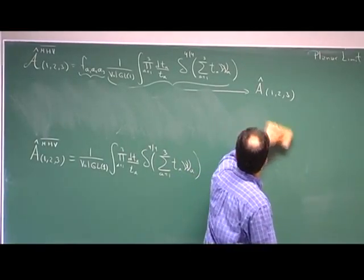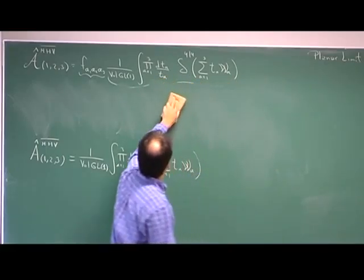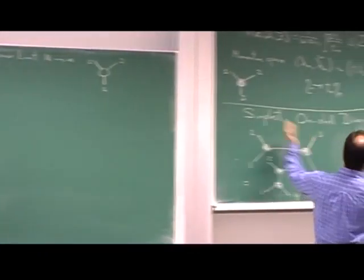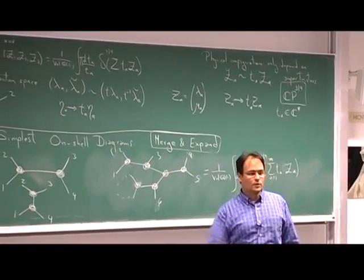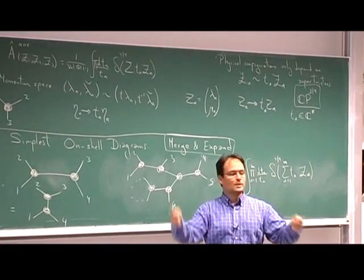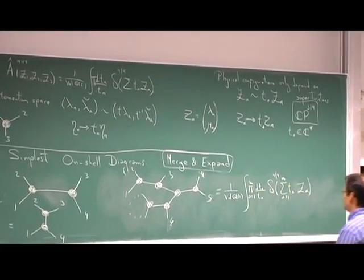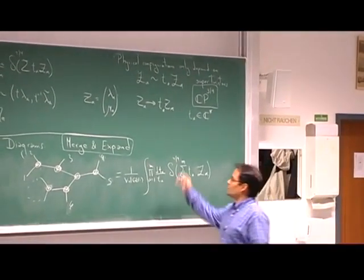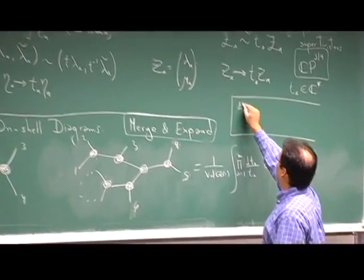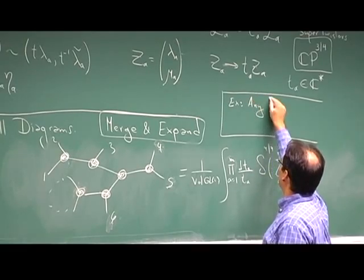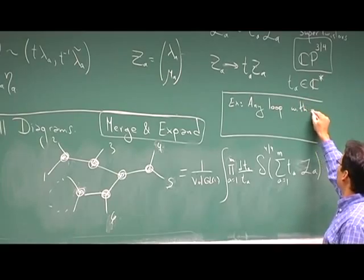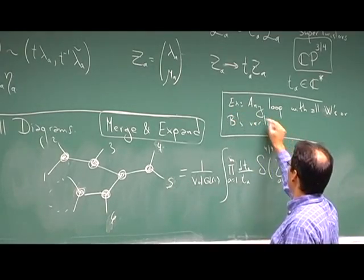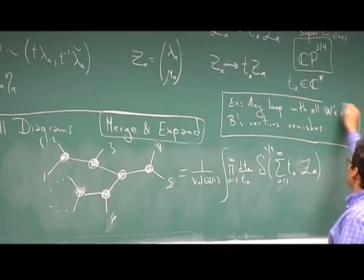What would be the natural next step? If you're in the business of making diagrams like this, you have black and white vertices. You know how to compute any tree made out of only black guys, any tree made out of only white guys. It turns out that if you try a loop of only black guys or white guys, you get zero — that's an exercise. You get something that vanishes immediately because of supersymmetry: the supersymmetric delta functions cannot be satisfied, so you get immediately zero. Any loop with all-white or all-black vertices vanishes identically.